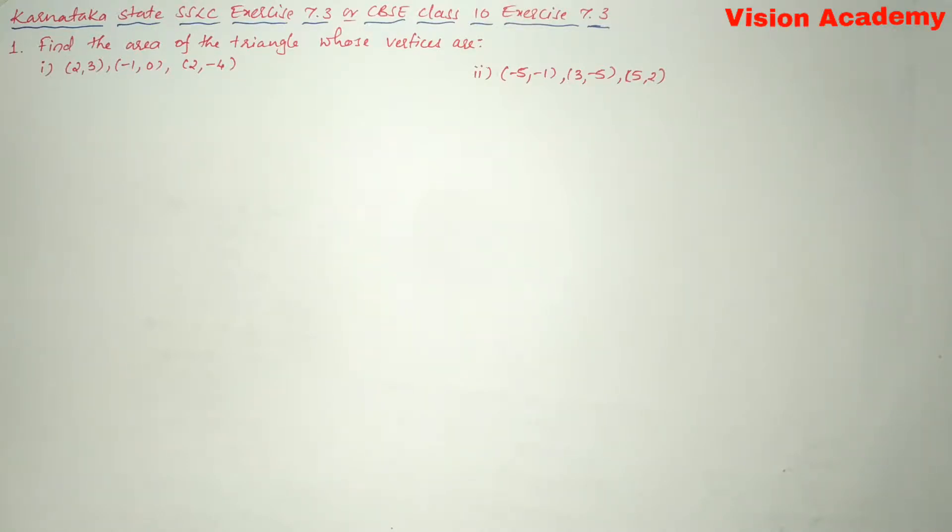Question number one, find the area of the triangle whose vertices are Roman number one: (2,3), (-1,0), (2,-4).